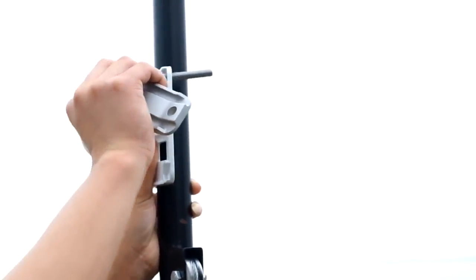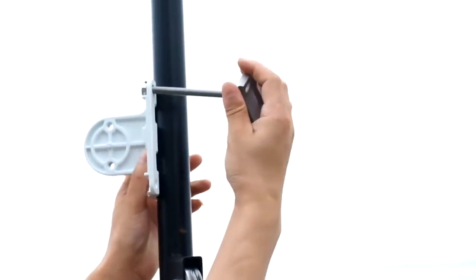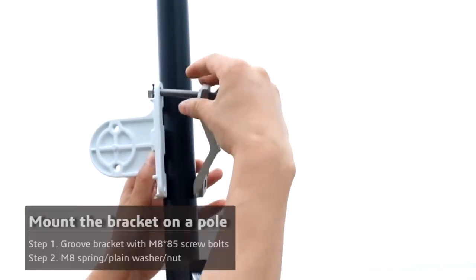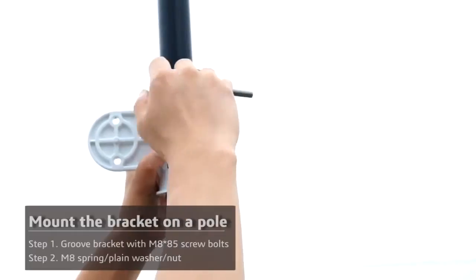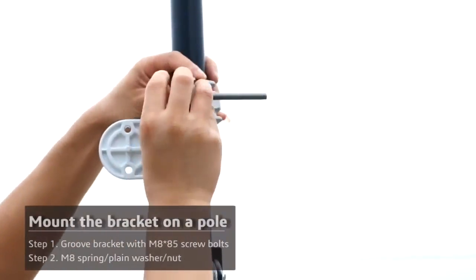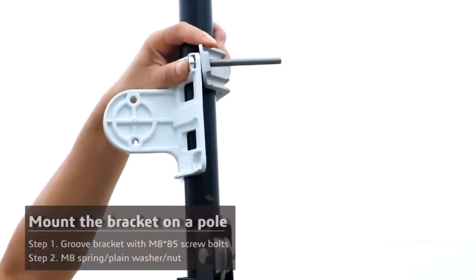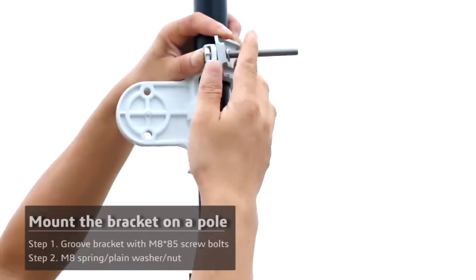The second step is installing the other bracket onto the pole. First, put the large curved bracket onto the pole. Then slide the M8 85mm screw through the bracket. Place the other small curved bracket on the other side and run the bolt through that as well.